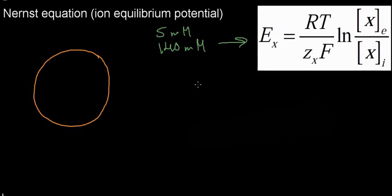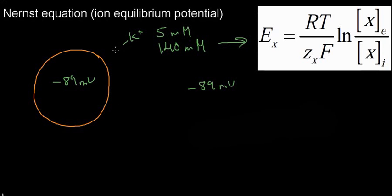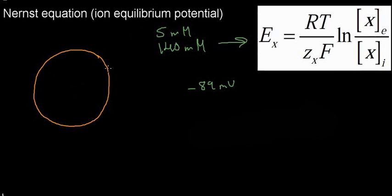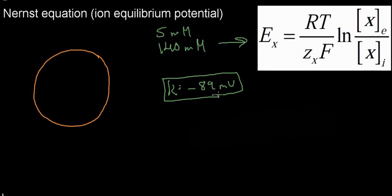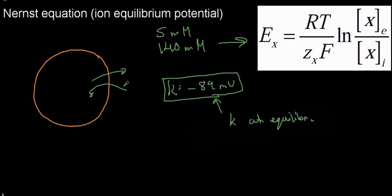If I plug in figures for potassium — 140 millimoles inside and 5 millimoles outside — into the Nernst equation, I get negative 89 millivolts. This means that if this cell is ever at negative 89 millivolts, potassium ions are not going to have any net flux across it. Potassium is going to want to make the cell reach negative 89 millivolts. That is the equilibrium potential of potassium: the point at which potassium is at equilibrium with no net flux in or out.